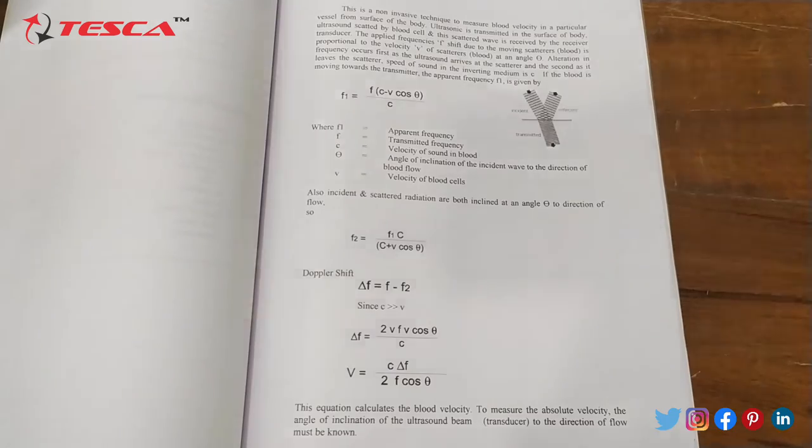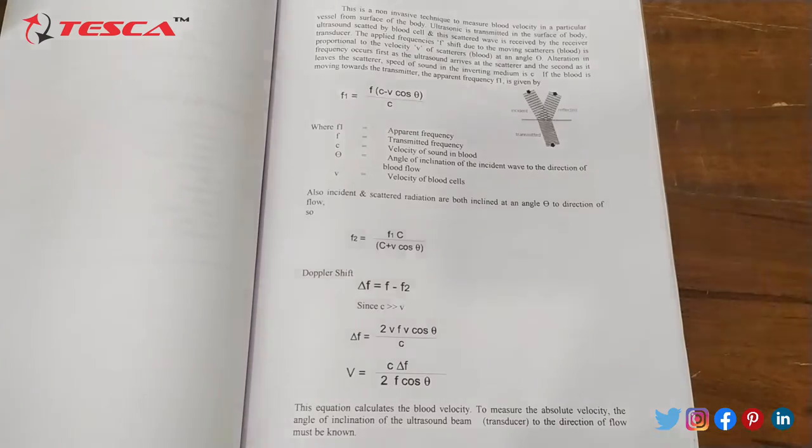Now let's talk about the calculation part. First of all we will calculate F1, that is apparent frequency. So F1 is equal to F into C minus V cos theta upon C. Here F1 is apparent frequency, F is transmitted frequency, C is velocity of sound in blood, theta is the angle of inclination of the incident wave to the direction of blood flow, V is the velocity of blood cells. That is how you can calculate F1.